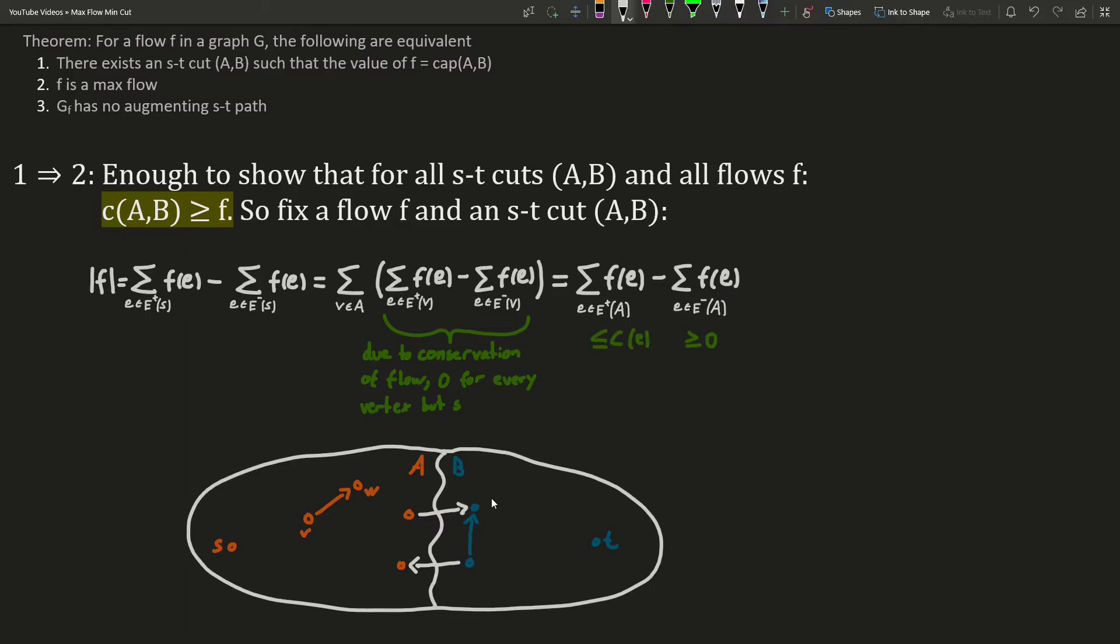Note that due to the capacity constraints, all terms in the left sum are smaller than or equal to the edge's capacity. As flow cannot be negative, each term in the right sum is greater than or equal to zero. So we know that if we omit the right sum, and replace the terms in the left sum by the edge's capacity, the resulting term must be greater or equal.